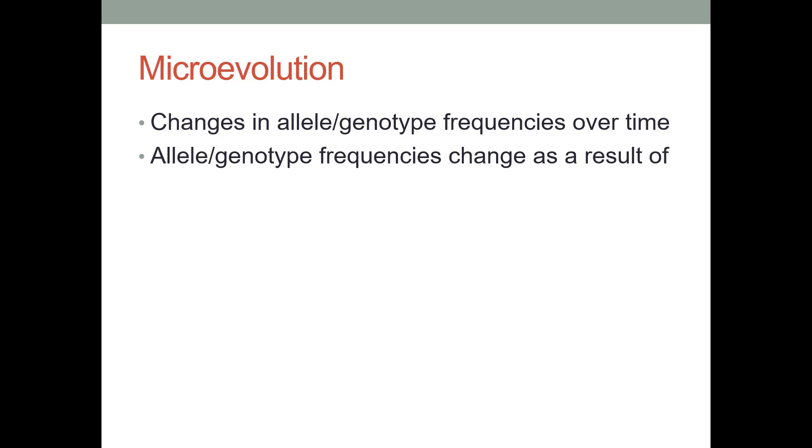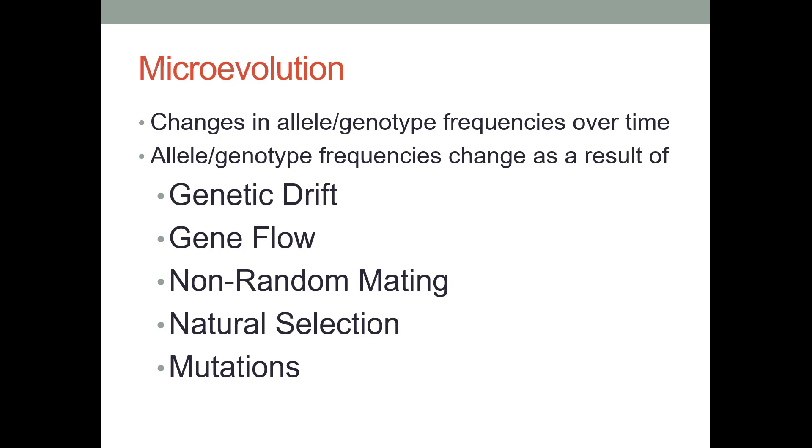They're not unrelated topics, but we're focusing on the small scale changes in this lab. Now, there are things that will change allele and genotype frequencies, things that will cause evolution. Some of them are adaptive and some of them are not. First of all, genetic drift. Genetic drift is the random change in allele frequencies just due to chance. So that is not adaptive.